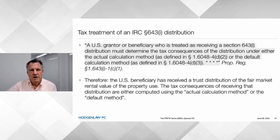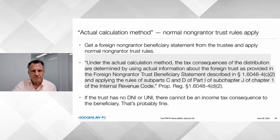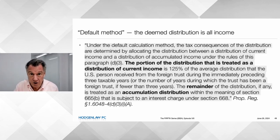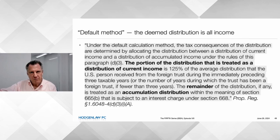The tax treatment of that deemed distribution: it's either ordinary income or an accumulation distribution — both taxable, the latter at a higher rate. Note what's not there: it's not treated as a distribution of capital. So that week of use by a distant relative of the trust's condo is going to be taxable income to you no matter what. My conclusion: if you have US beneficiaries, please use a domestic trust — you're going to make things a lot simpler for yourself.